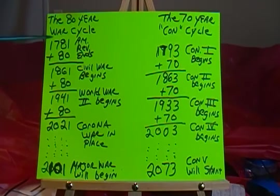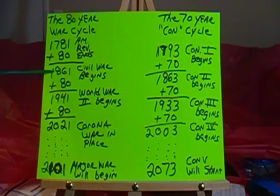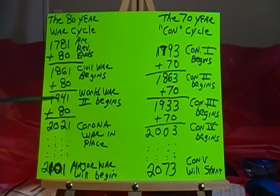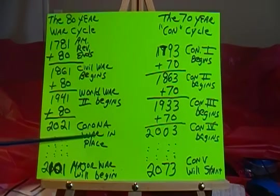To review the 80-year war cycle: we start with the American Revolution, which ends in 1781. Add 80, takes you to 1861 — the Civil War begins. Add 80, takes you to 1941 — World War II begins. Add 80, and it brings you right into the present moment of 2021. The Corona War is in place.